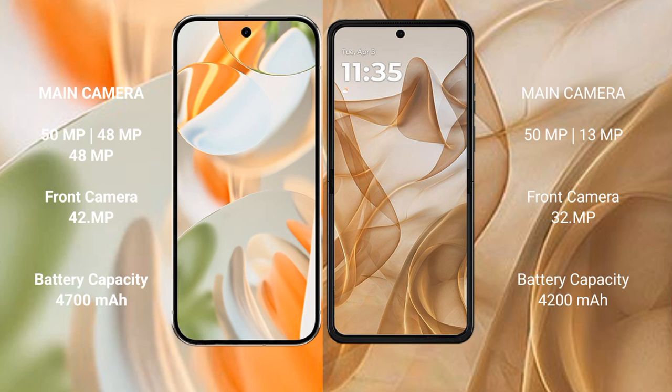The Google Pixel 9 Pro features a rear triple camera setup with 50MP, 48MP, and 48MP sensors, along with a front camera of 10.5MP.